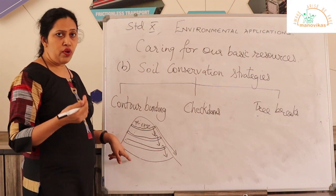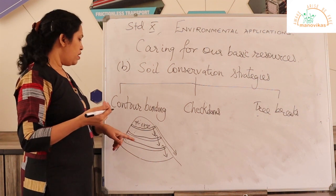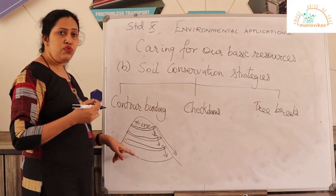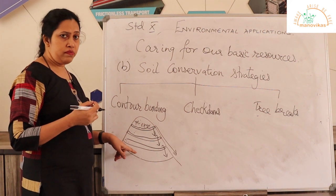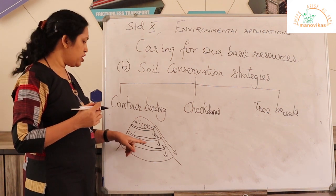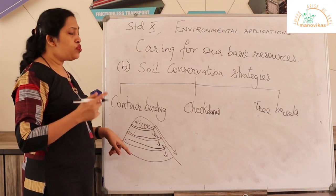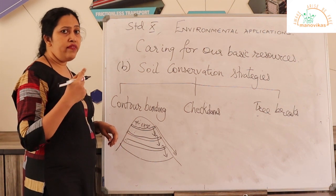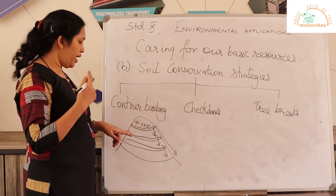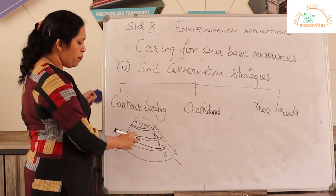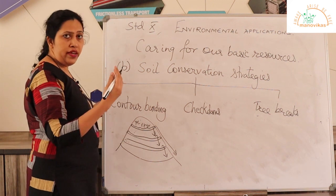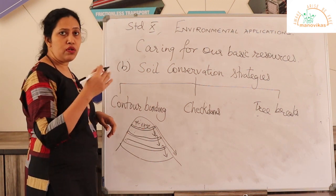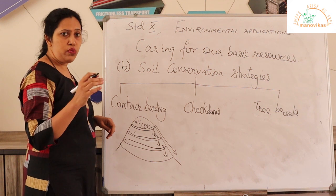Regarding advantages and disadvantages of contour bunding: locally available material is used to form the bunds, so they must be monitored and maintained regularly. During heavy rain, parts of the bund may be washed away. However, since it is done at the local level, unskilled labor can be employed for this work.